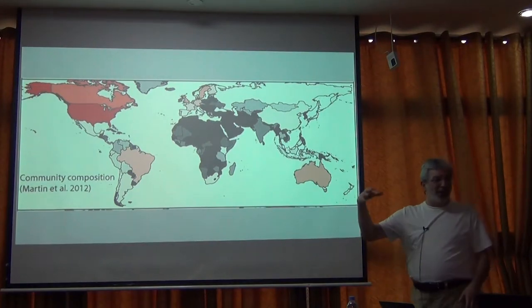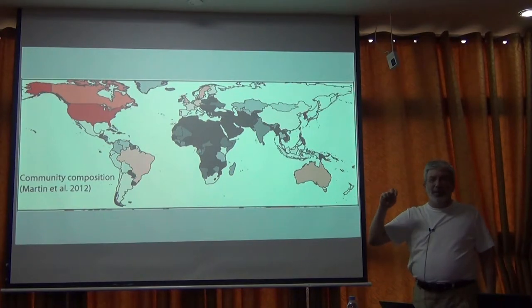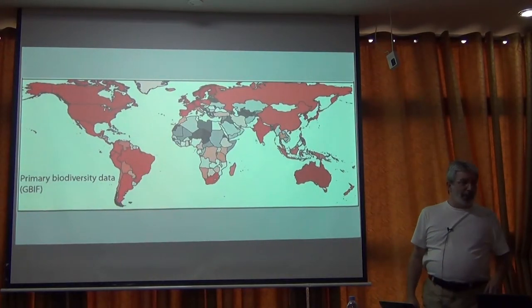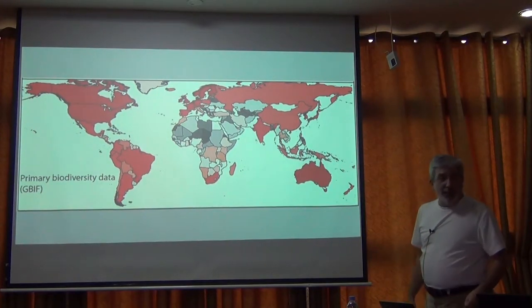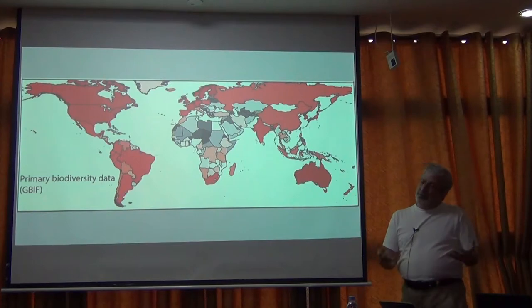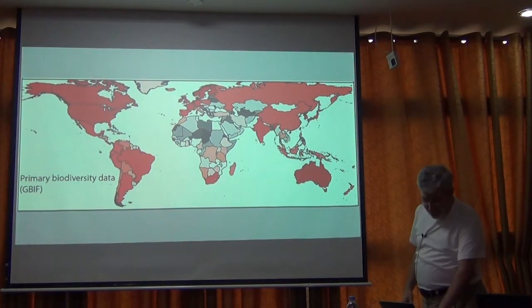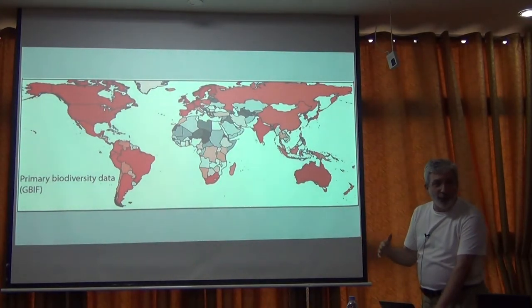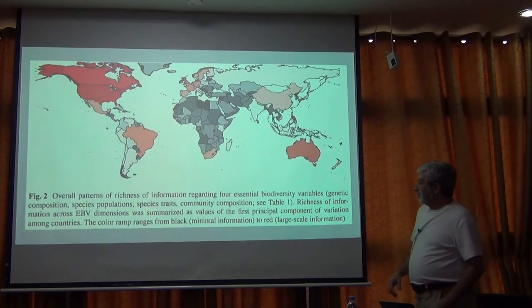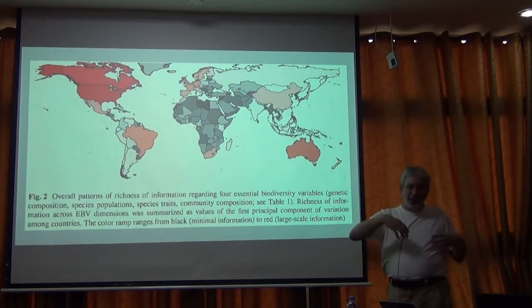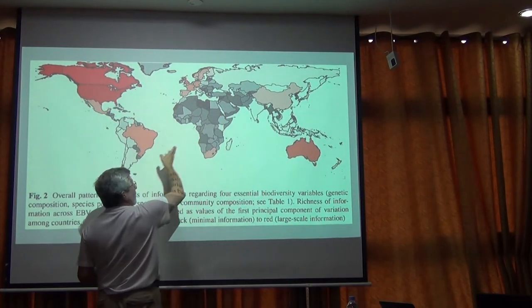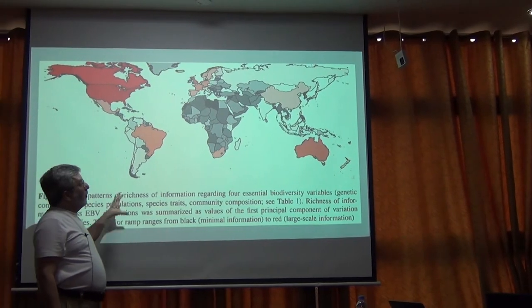If we set aside data specifically on community composition and instead look at data on distributions of species, we can look at GBIF and get this view. What we did was pile all of this into a principal components analysis and come out with essentially the major axes of variation amongst countries worldwide — a view across all four or five of those views of essential biodiversity variables. And we get this: the main tendency across all of those variables shows exactly the same pattern. Essentially there's this diagonal that cuts across the Earth, which is a gap of information.